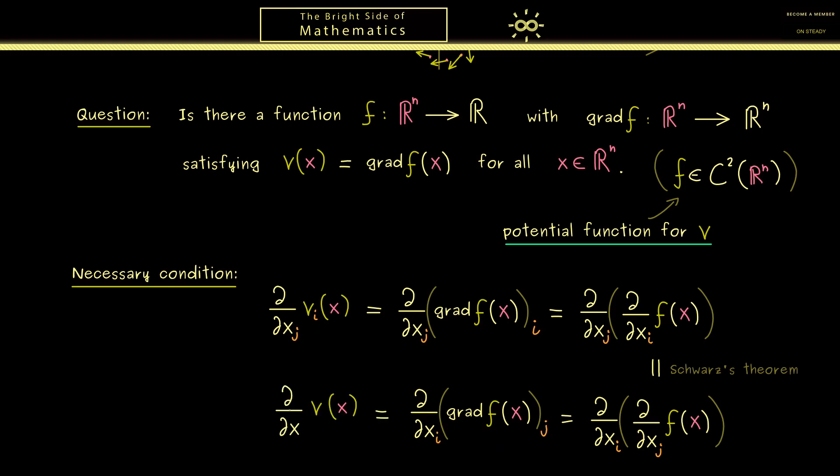And then we just have to translate it again to the vector field V. More precisely, now we have the j-th component of V and we have the partial derivative with respect to x_i. Here we see we have shown that this is the necessary condition: both partial derivatives have to be the same, so obviously for all i, j and for all x. This is the condition you can remember—it's necessary for the existence of such a potential function.